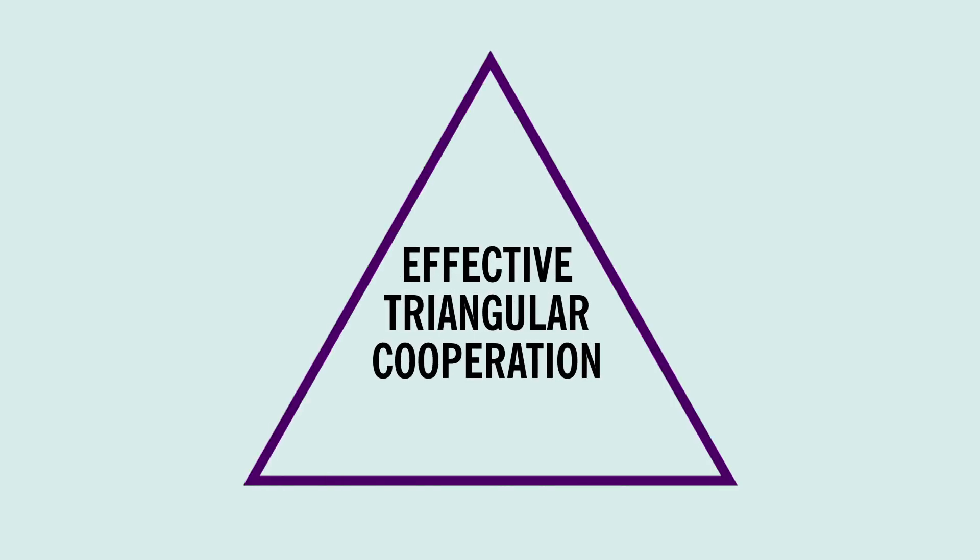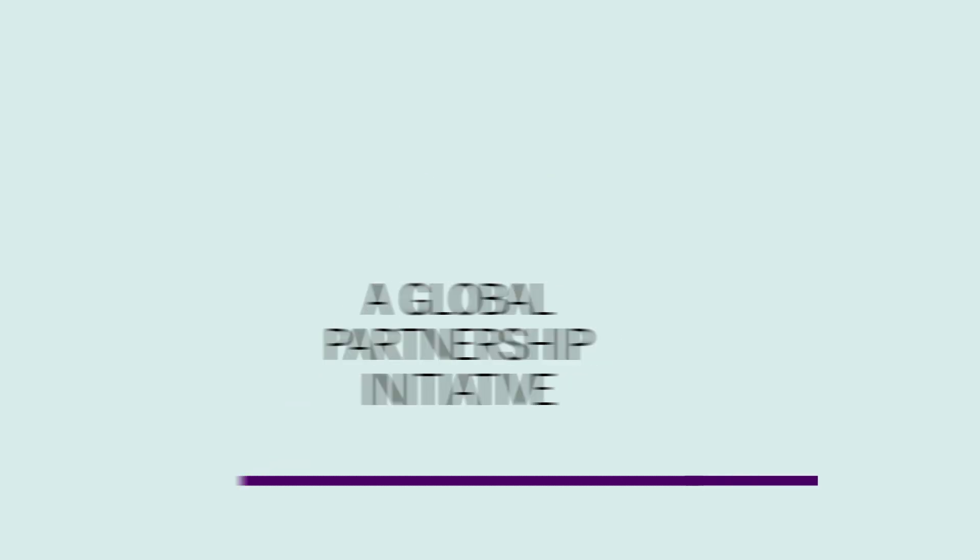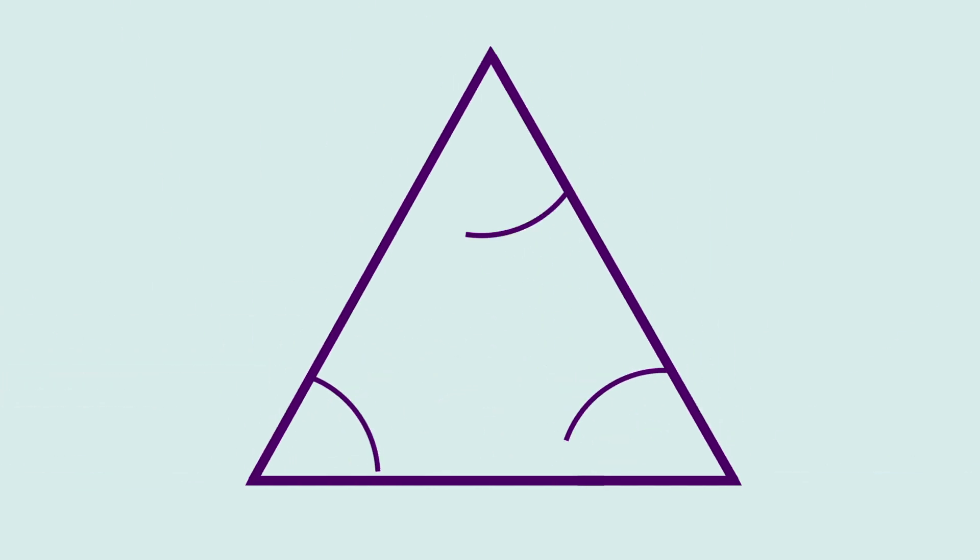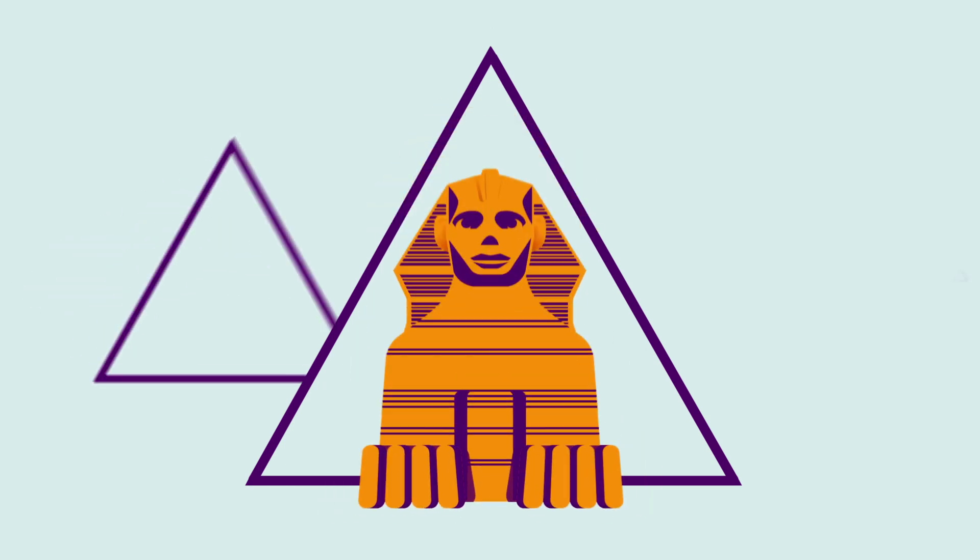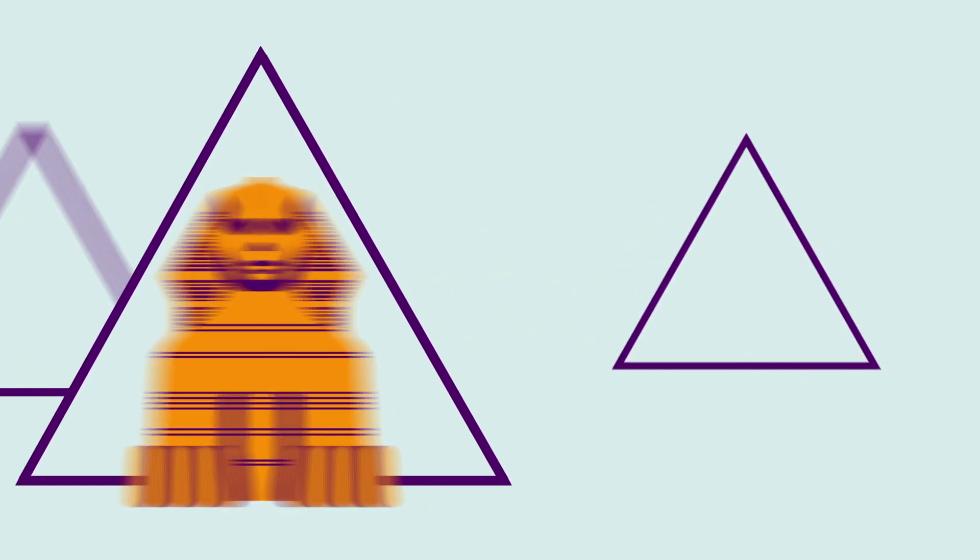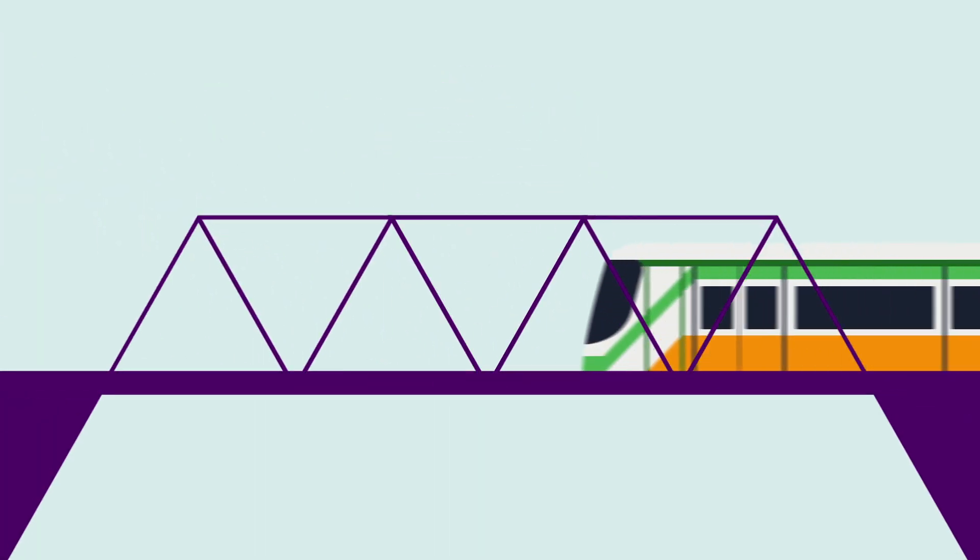Effective Triangular Cooperation – A Global Partnership Initiative. The triangle is the strongest, most stable shape there is. From the Egyptian pyramids to the intricate structure of geodesic domes, triangles have been integral to many advances in human engineering.